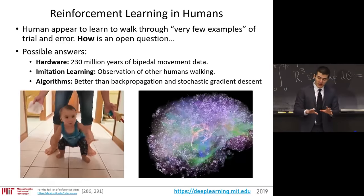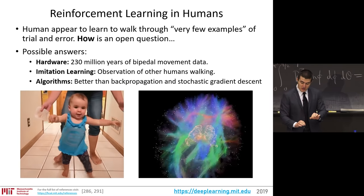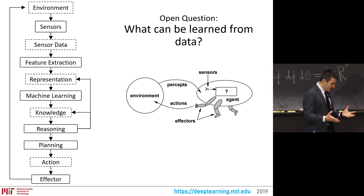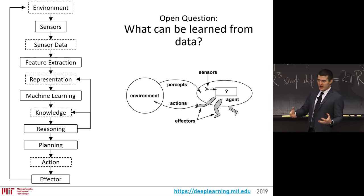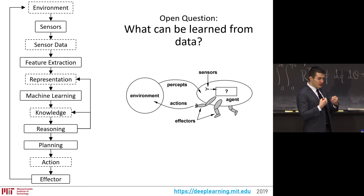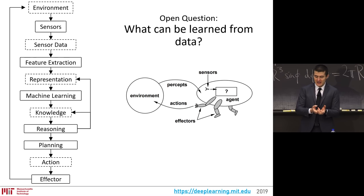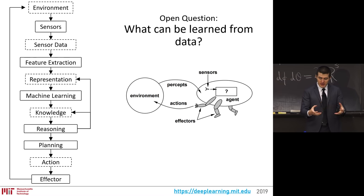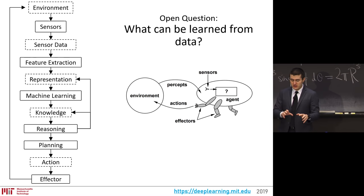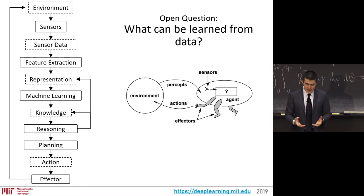I want you to think about that as we talk about the very trivial — by comparison — accomplishments of reinforcement learning, and how we take the next steps. It is nevertheless exciting to have machines that learn how to act in the world. The process of learning, for those who have fallen in love with artificial intelligence, is thought of as intelligence itself: the ability to know very little and, through experience, interaction with the world in whatever medium — data, simulation — be able to form much richer representations and act in that world. That's the dream.